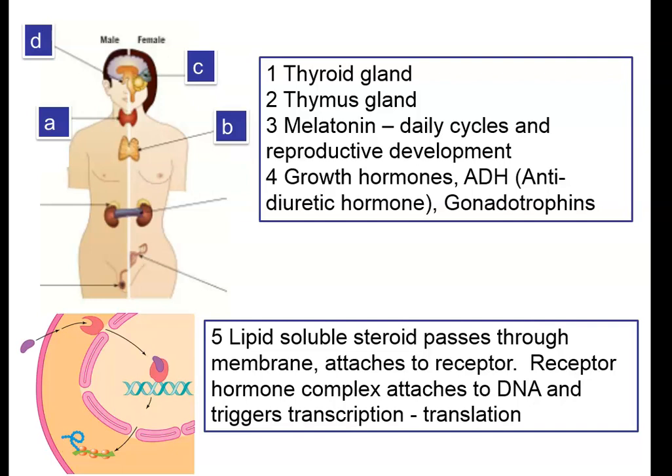Melatonin was involved in daily cycles and in reproductive development. And the hormones produced in gland D, which is the pituitary gland, include things like growth hormones, gonadotrophins, FSH, LH. Remember, ADH is produced actually in the hypothalamus, but stored and released from the pituitary gland.